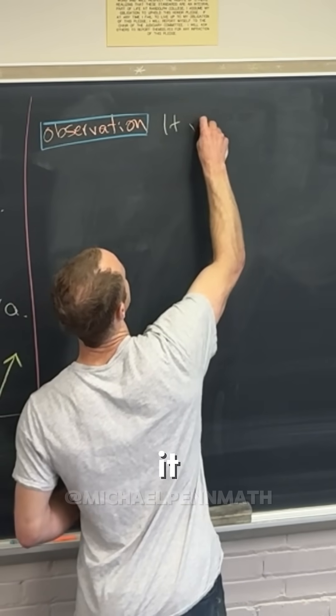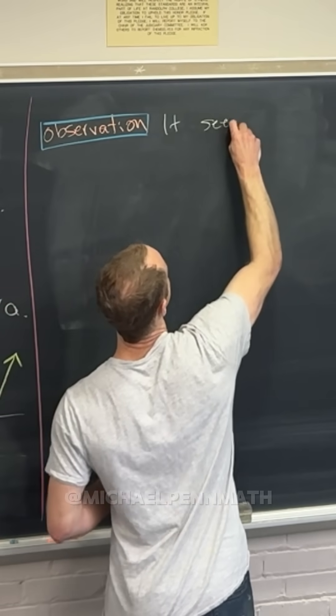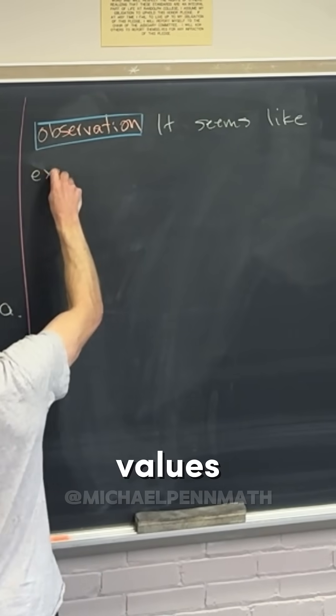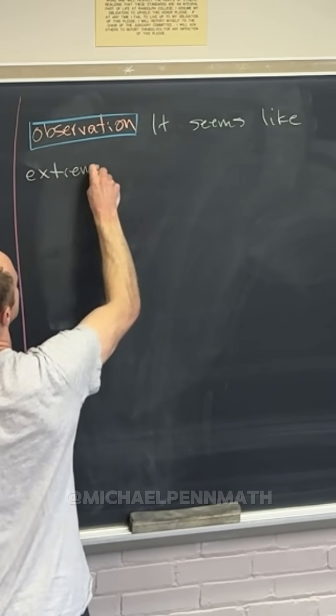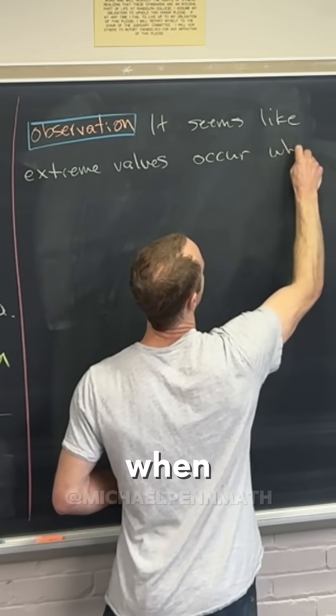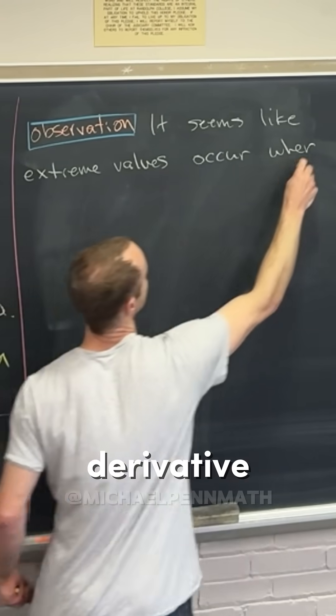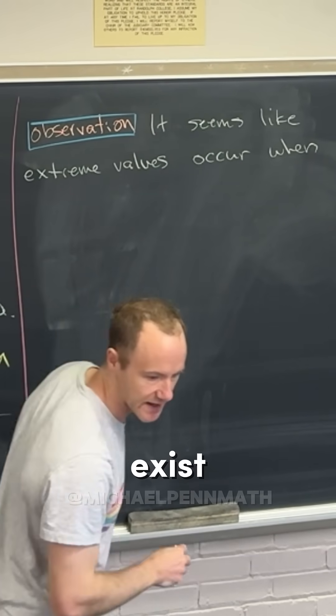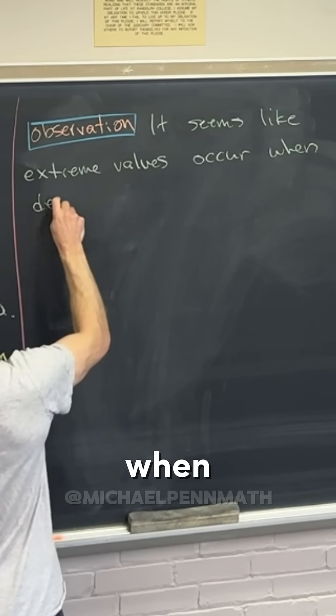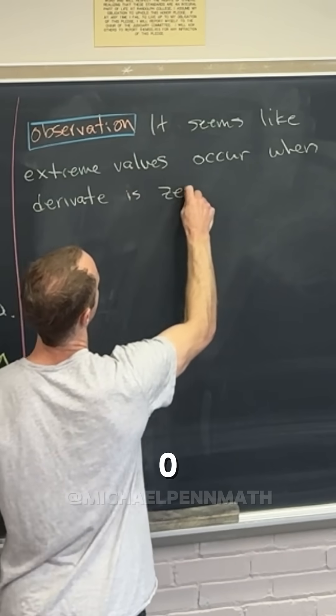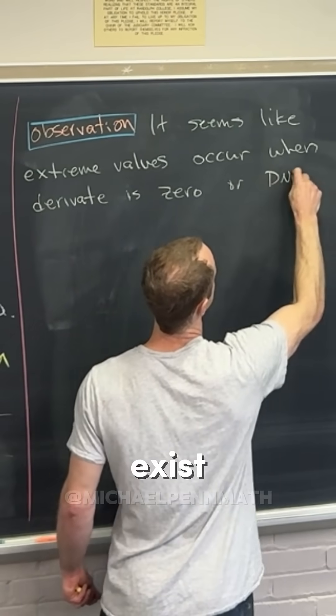So it seems like extreme values occur when the derivative is equal to zero or does not exist. So when derivative is zero or does not exist.